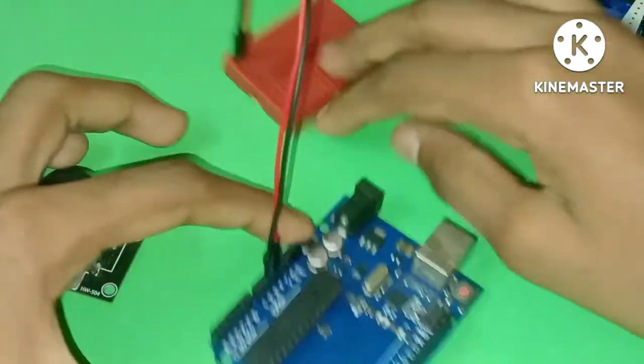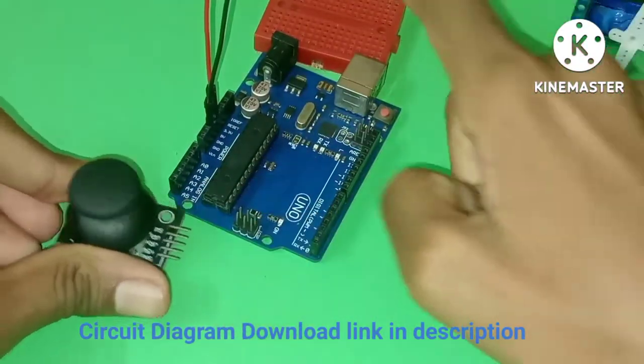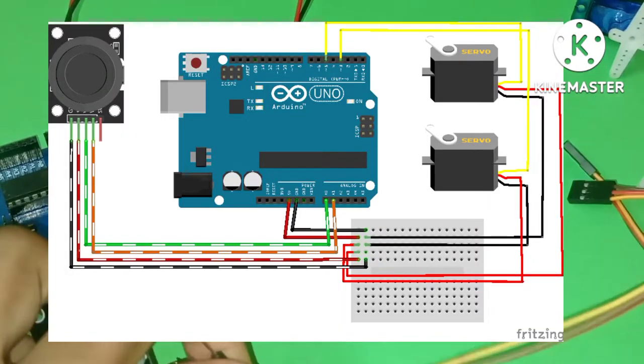For the servo motor, connect the power and ground wires. Now let's connect the joystick module to the breadboard. Next, I'm going to show you the pin connections on the joystick.